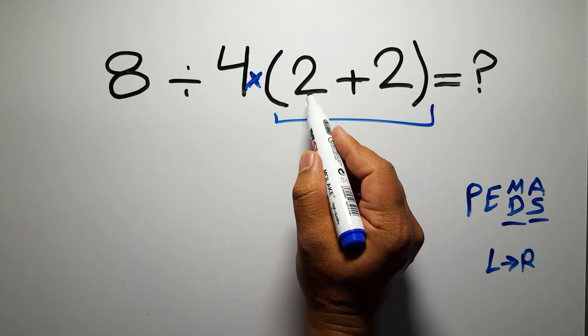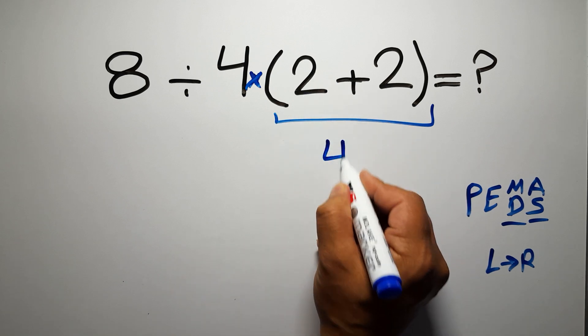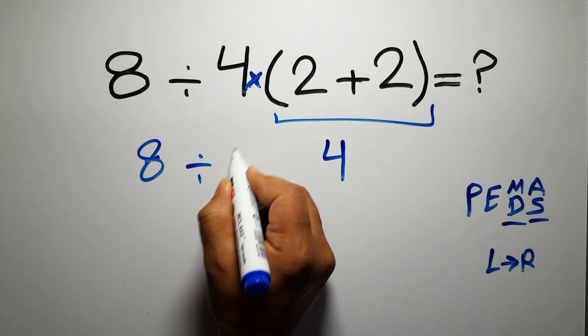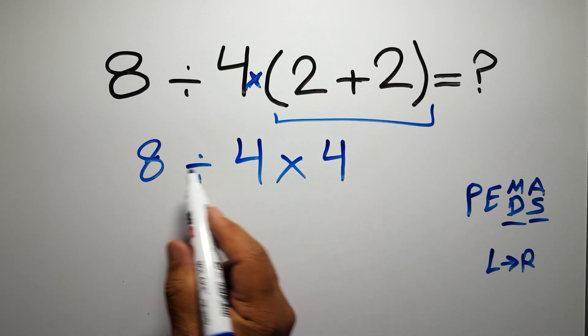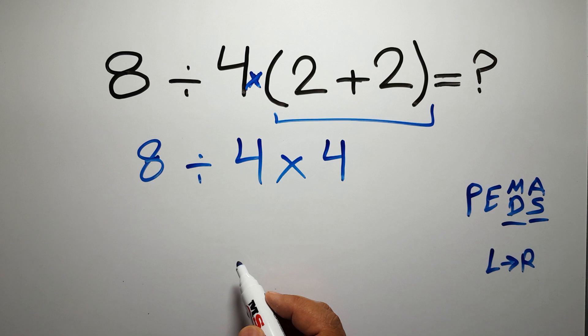Inside these parentheses, we have 2 plus 2, which gives us 4. So, 8 divided by 4 times 4. Now we have one division and one multiplication. As I said, multiplication and division have equal priority and we have to work from left to right.